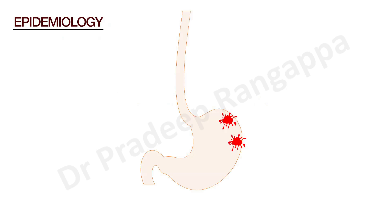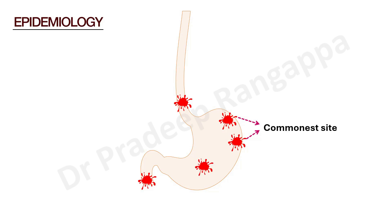When we look at the epidemiology of stress ulcers in ICU, the commonest sites are found to be in the fundus and the body of the stomach. Stress ulcers can also occur in the esophagus — predominantly in the lower part — and in the antrum and the duodenum. Epidemiologically, they are mainly divided into two categories: superficial stress ulcers and deep stress ulcers.